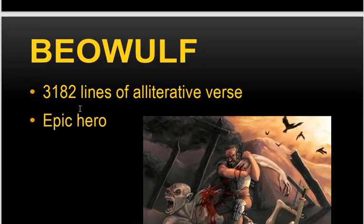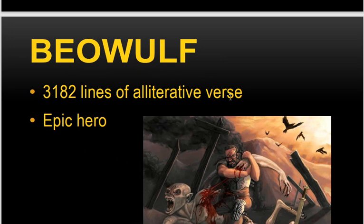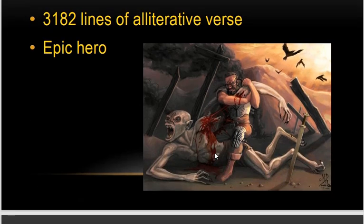Beowulf consists of 3,182 lines of alliterative verse — 3,182 lines. That makes it an epic, and the first English epic at that, but the writer is unknown, which is why the author is called anonymous.